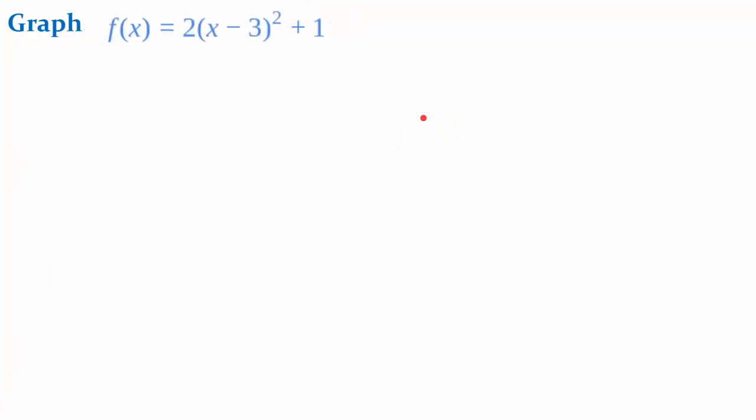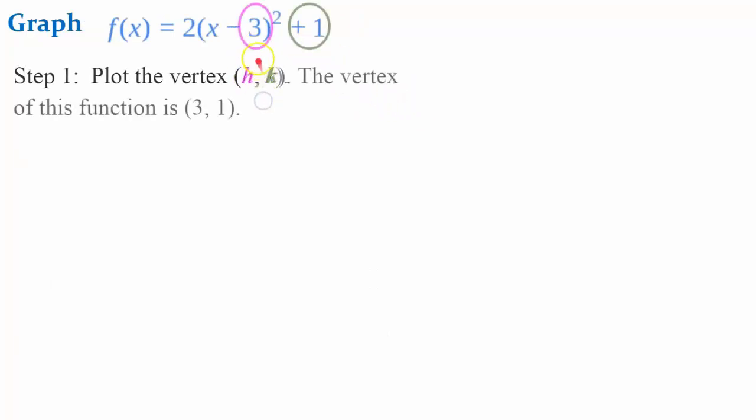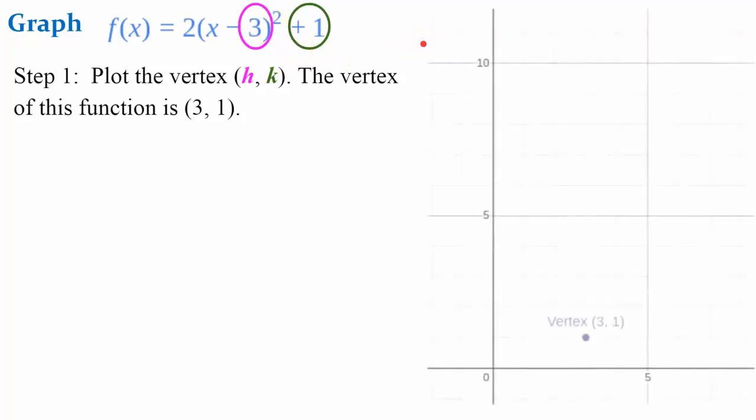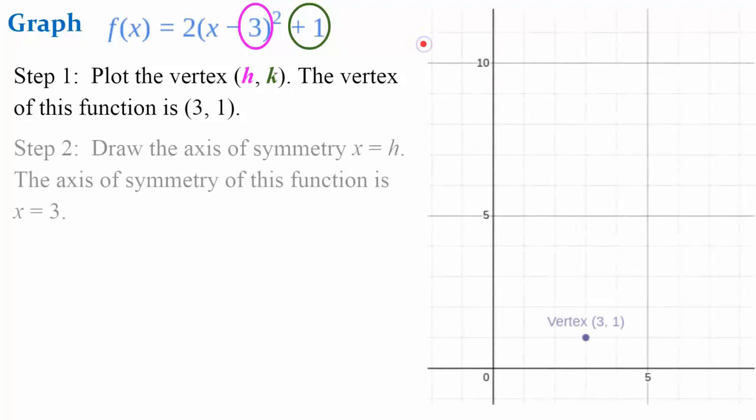Let's go ahead and do a practice problem. Let's graph this function. So first, I'm going to identify and plot the vertex. The value of h is positive 3. The value of k is positive 1. So I have a vertex of the ordered pair (3, 1). Plot it on your graph.